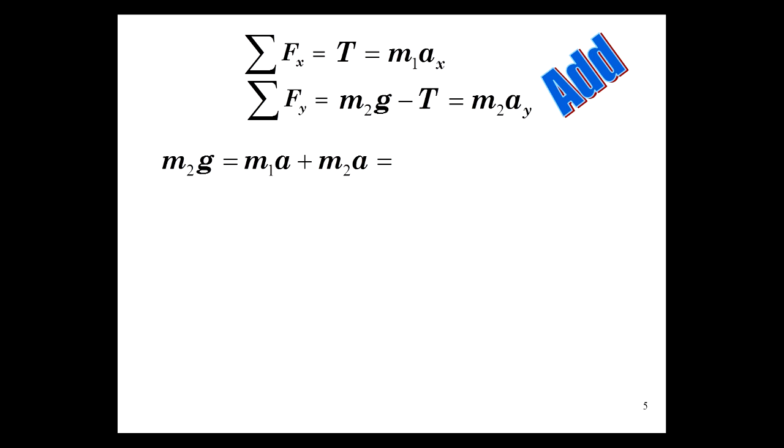Notice I've dropped the subscript because ax and ay are the same thing in this case. So that's m1 plus m2 times a, and we have our formula for acceleration.